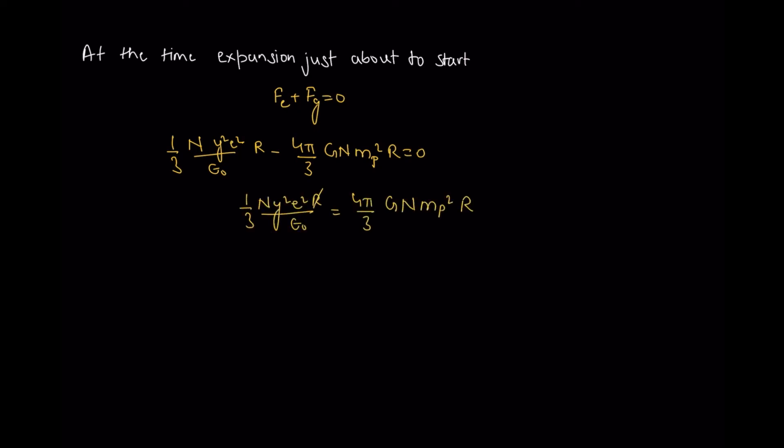At the time of expansion just about to start, my electrostatic force and gravitational force must sum to zero. So nye²/3ε₀·r - 4π/3·Gnmp²r = 0. Cancelling terms, y² = 4πGmp²ε₀/e², so y = √(4πε₀Gmp²/e²) which is nearly equal to 8×10⁻¹⁹. This is the difference which should be there between the charges.